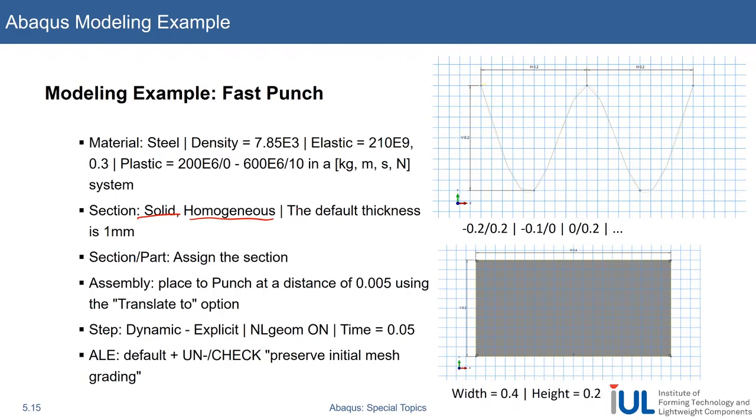So for the material we'll use steel, and this time I've given here the unit system that I'm working in. So I hope you remember, we take kg, meter, and thus meter cubic in the case of density, pascal. Since we define pascal, it's 210 to the power of 9, like a simple elastic approach here. Assigning the section, default thickness here is 1 millimeter.